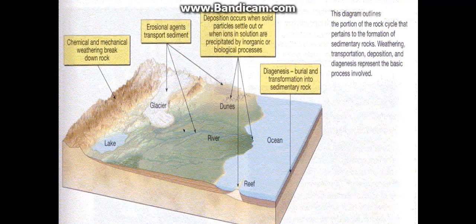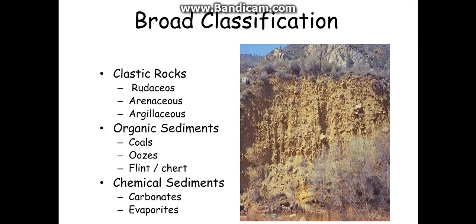The broad classification includes clastic rocks, organic sediments, and chemical sediments — these are the three types. You can see on this picture the deposited material at the bottom. Deposited particles include soil, fine, coarse, and very fine types. Further subdivided: rudites, arenites, and argillaceous; and organic sediments — gold oozes, plant shards; and chemical sedimentation — carbonates and evaporites.